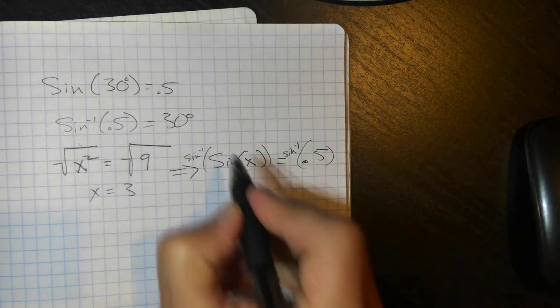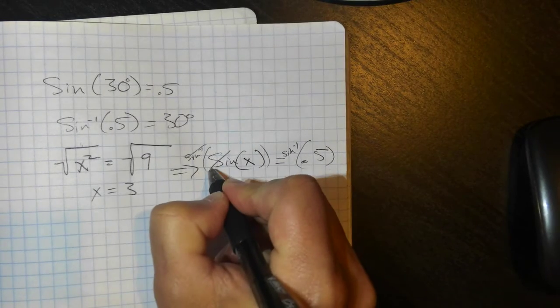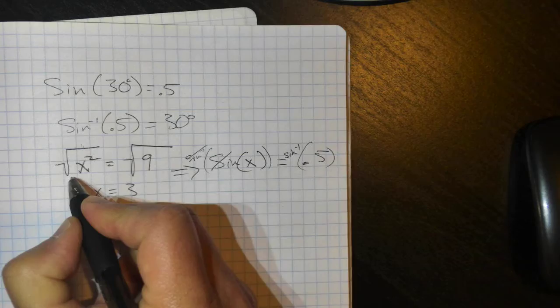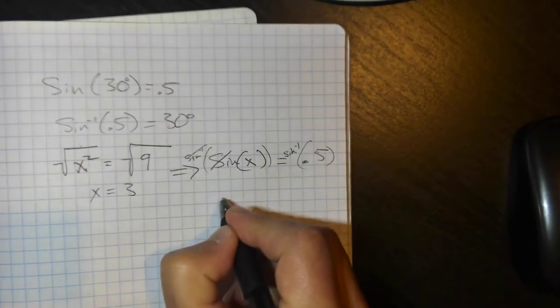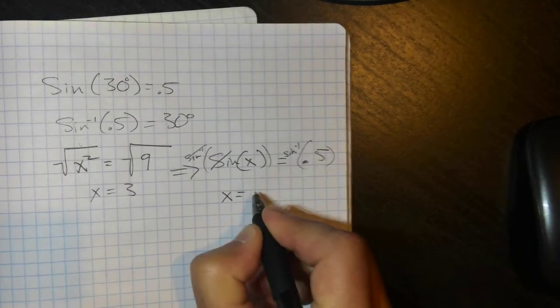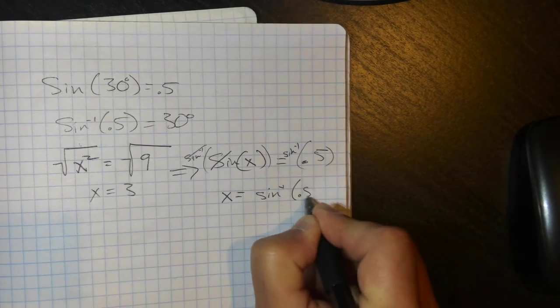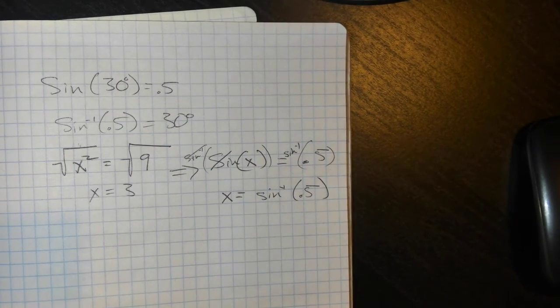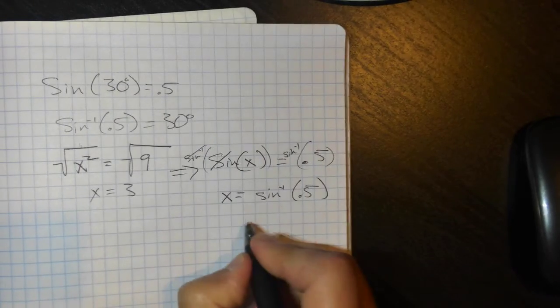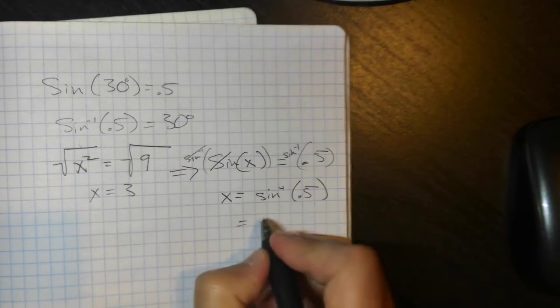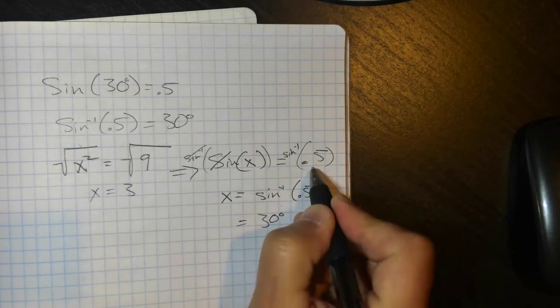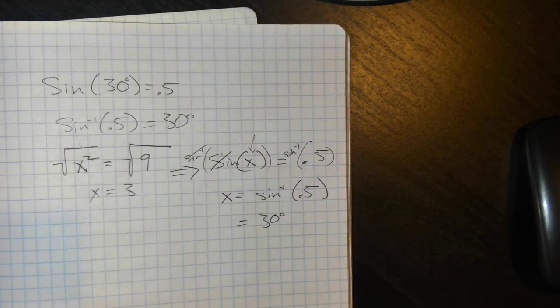And so what happens is the inverses cancel out, just like the square root and the square do, and I just have x on one side is equal to the inverse sine of 0.5. So then all I would do is plug that in my calculator, and I would end up with my 30 degrees. So that would be how I'd find the angle.